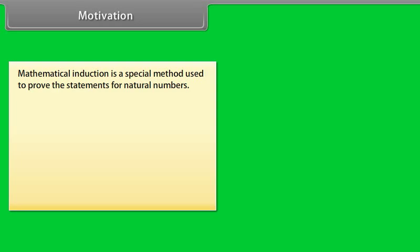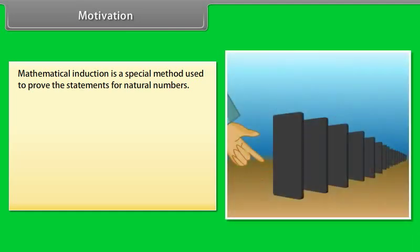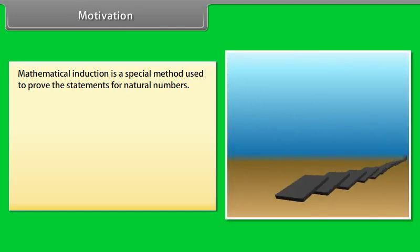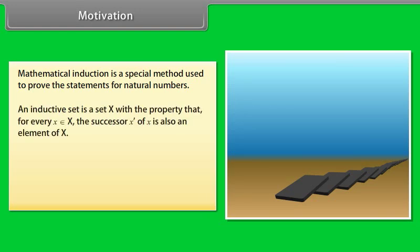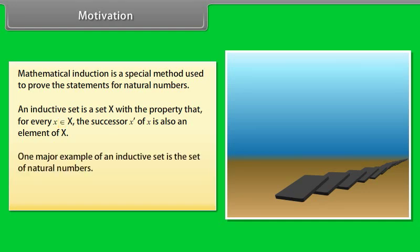Motivation. Mathematical induction is a special method used to prove the statements for natural numbers. In the featuring clip, we push the first domino, then the next one automatically falls and we see that all the dominoes fall. It shows the induction. An inductive set is a set X with the property that for every x belonging to X, the successor x' of x is also an element of X. One major example of an inductive set is the set of natural numbers.